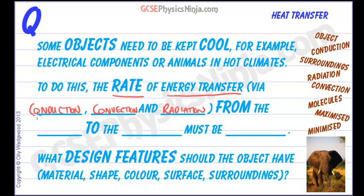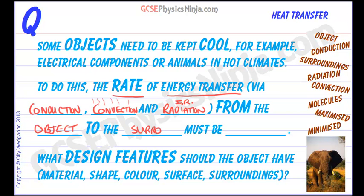Conduction is for solids — how heat moves through a solid. Convection is how gas or fluid rises, and that transfers heat energy away. Radiation is infrared waves that are given off by all objects. So the rate of energy transfer via these three methods from the object to the surroundings must be maximized.